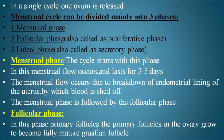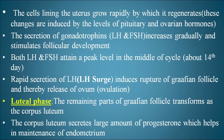The menstrual phase is followed by the follicular phase. In the follicular phase, primary follicles in the ovary grow to become the fully mature Graafian follicle. The cells lining the uterus grow rapidly, regenerating the endometrium. These changes are induced by the levels of pituitary and ovarian hormones.